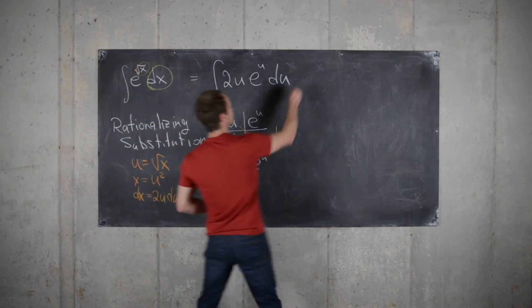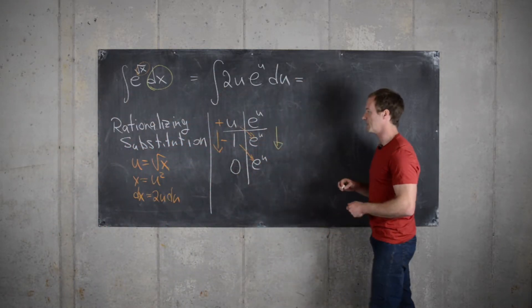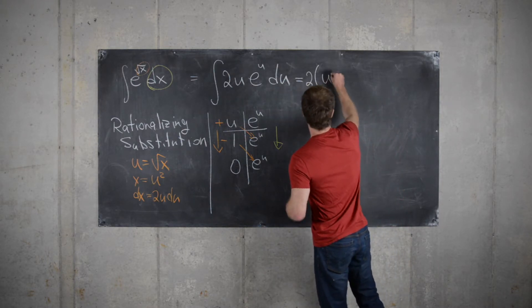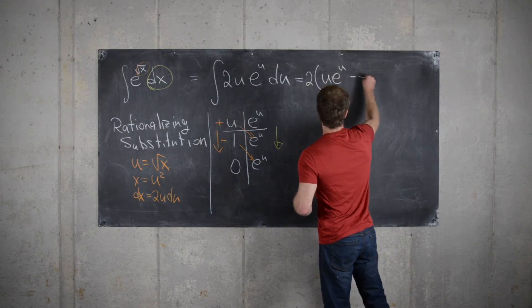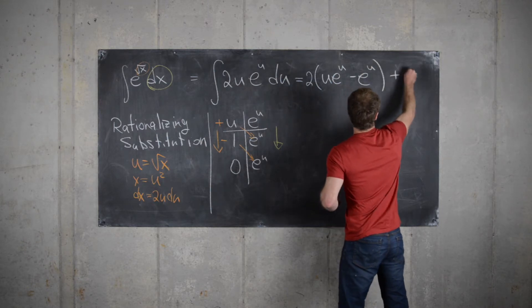So, that gives us an antiderivative of this being 2u e to the u minus e to the u plus a constant.